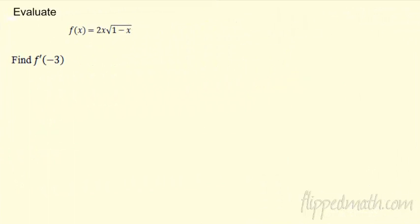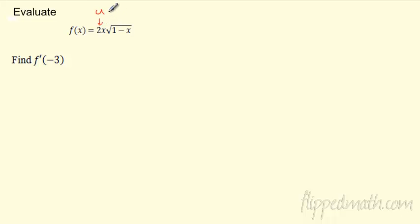All right, let's take a look at this one. We're going to find the derivative and evaluate it at x = -3. When I look at this function — oh, this is interesting — I actually have a u times a v: a product rule going on here. I've got two functions.